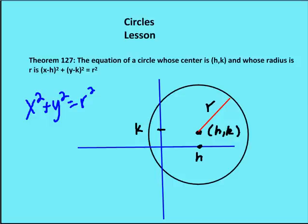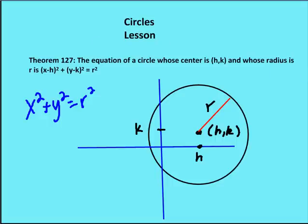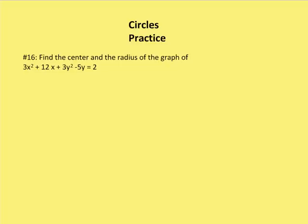All right, so understanding that, let's move on to a problem. The first problem: we want to find the center and the radius of the graph 3x squared plus 12x plus 3y squared minus 5y equals 2. We're going to use a process called completing the square to rewrite this into the standard circle equation x minus h squared plus y minus k squared equals r squared.